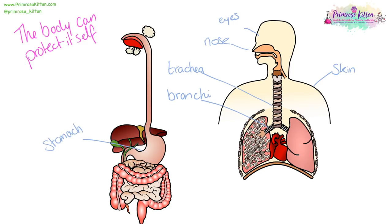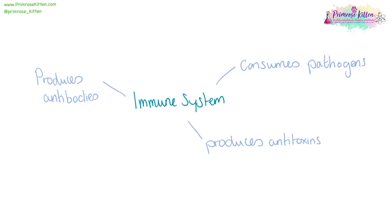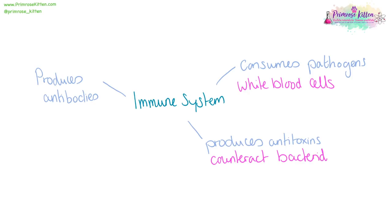The body is rather good at protecting itself against pathogens. The stomach is full of acid which kills bacteria. Your respiratory system — your nose, trachea, and bronchi — are full of mucus and hairs which trap bacteria. Your skin acts as a barrier which stops things getting in, and your eyes have tears which wash them out. Your immune system is brilliantly clever: white blood cells will engulf and eat anything unfamiliar and dangerous and destroy it. They produce anti-toxins to counteract the toxins that bacteria produce, and they produce antibodies so that they can recognise pathogens faster.